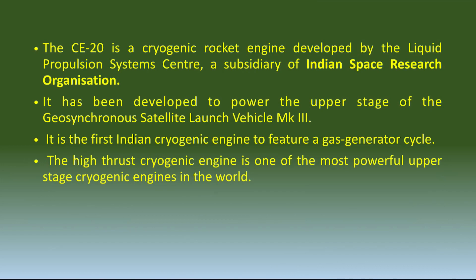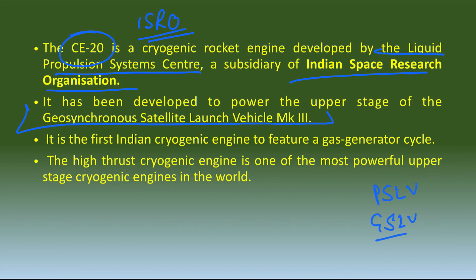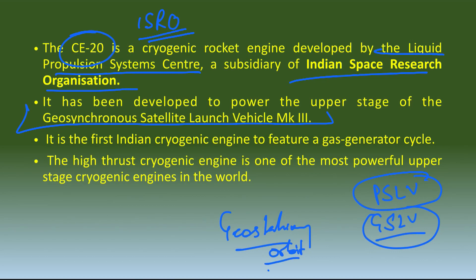Joh cryogenic rocket engine India mein use hota hai by ISRO, this is CE-20. It is developed by Liquid Propulsion System Centre, which is a subsidiary of ISRO. It has been developed to power the upper stage of GSLV Mark 3. Humare launch vehicles mein mainly PSLV aur GSLV hain. PSLV ko humne zyada use kara hai low earth orbit ya middle earth orbit mein satellites place karne ke liye. Lekin GSLV ko hum use karte hain geostationary satellites ke liye, jo normally communication satellites hote hain.